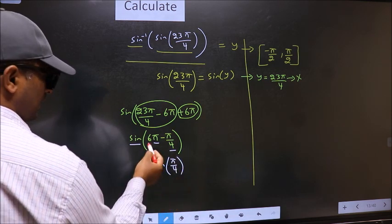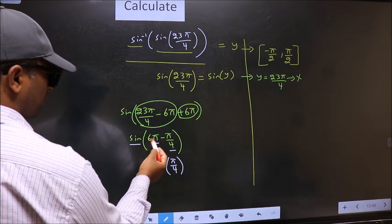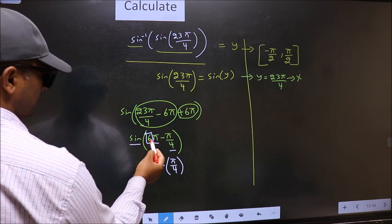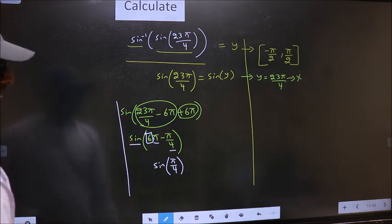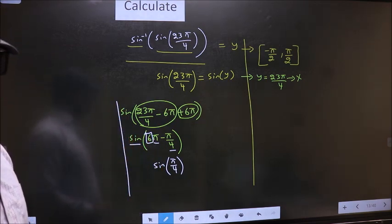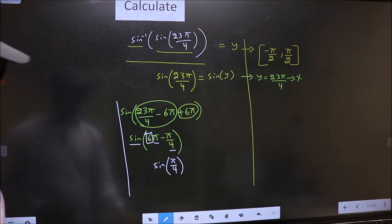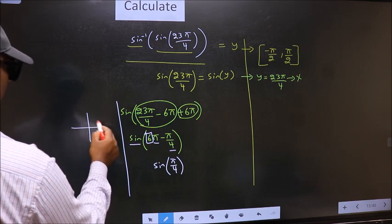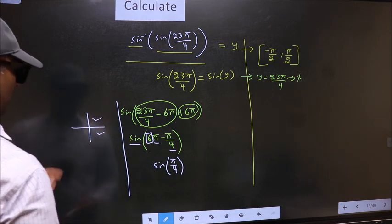To answer that we should look at the number before pi, which is 6. And 6 is even. And all the even multiples of pi they lie in either the first or the fourth quadrant.